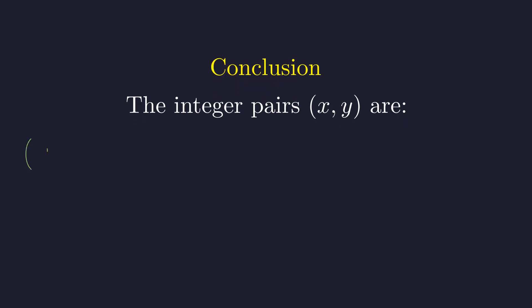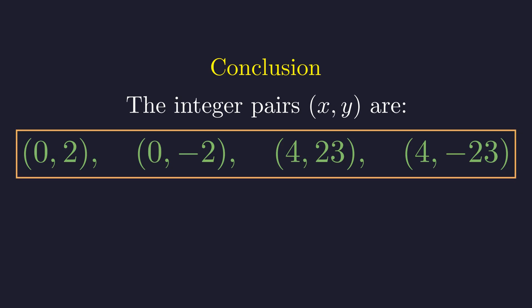So after exploring all possible integer values for x, we can now state our complete set of solutions. The integer pairs x and y are: 0, 2; 0, negative 2; 4, 23; and 4, negative 23. These four solution pairs represent all possible integer solutions to our exponential diophantine equation. What started as a complicated exponential equation was tamed by breaking it down into cases. Direct calculation for x equals 0 and a transformation into a Pell equation for positive x revealed the structure. While the complete proof of uniqueness for positive x requires advanced Pell equation theory, our approach demonstrates the key mathematical insights behind this beautiful IMO problem.